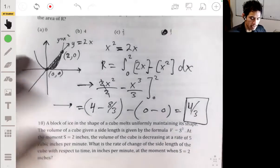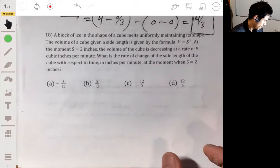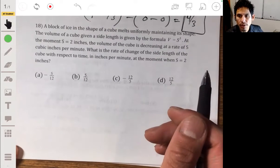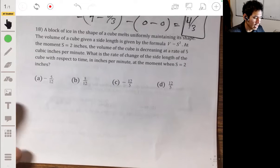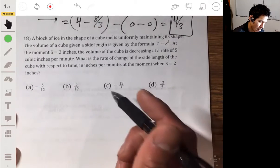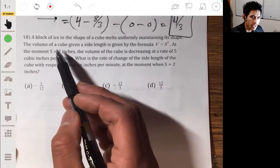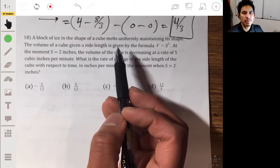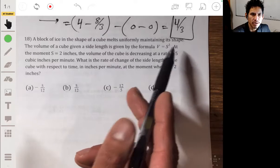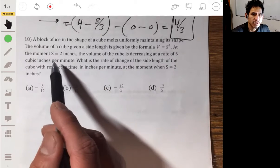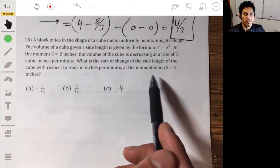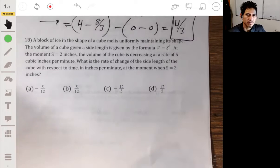Alright, problem 18. Alright, so now here, we have a rate of change, or a related rates problem. And so we have a block of ice in the shape of a cube melts uniformly, maintaining its shape. The volume of a cube given its side length is given by the formula V equals S cubed. At the moment S equals 2 inches, the volume of the cube is decreasing at a rate of 5 cubic inches per minute. What is the rate of change of the side length of the cube with respect to time in inches per minute at the moment when S equals 2 inches? These always usually sound complicated.